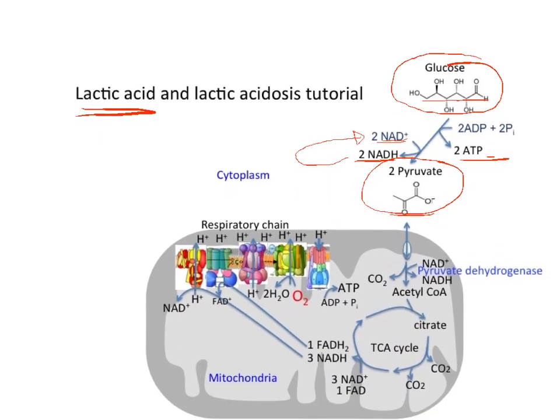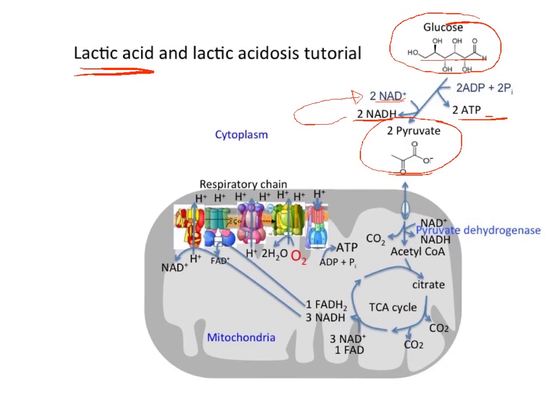Let's look first at what happens under conditions where not much lactic acid is released from cells, but instead the pyruvate enters the mitochondria and full carbon oxidation occurs. These are conditions where there is plenty of molecular oxygen and fully functioning mitochondria. Pyruvate, under these conditions, enters through the pyruvate transporter and is oxidatively decarboxylated by the enzyme pyruvate dehydrogenase, which is highly regulated.